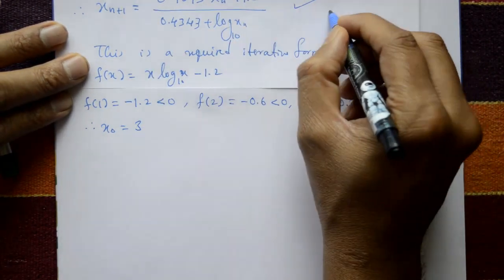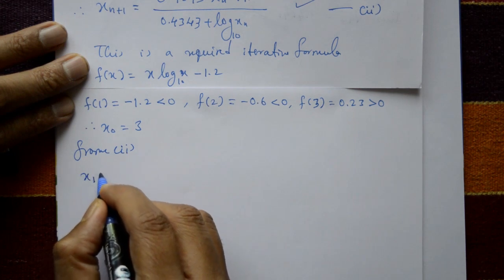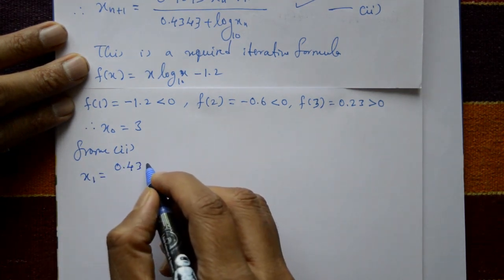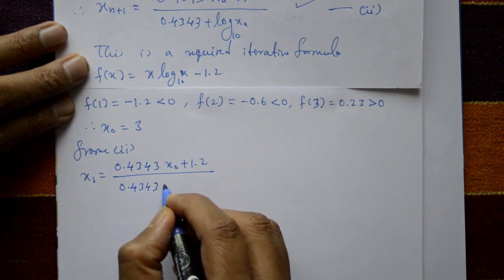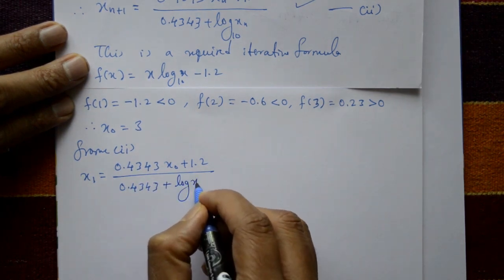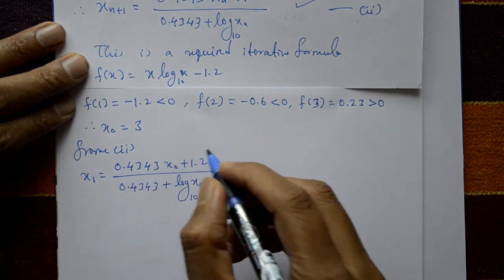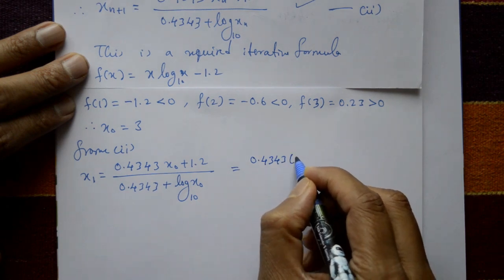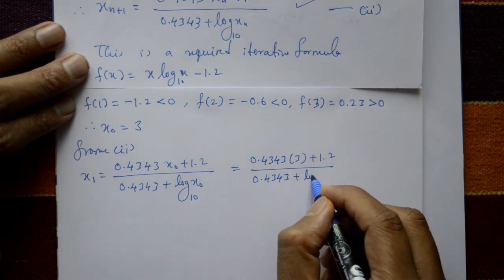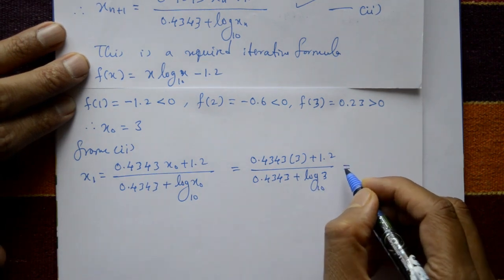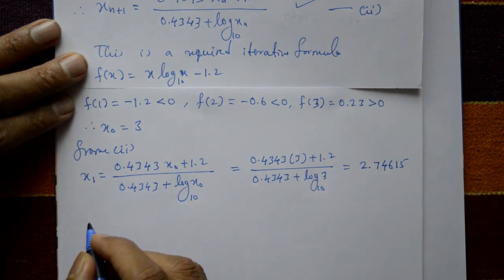Using equation number 2 with n = 0: x₁ = [0.4343·x₀ + 1.2] / [0.4343 + log₁₀(x₀)]. Substituting x₀ = 3: x₁ = [0.4343×3 + 1.2] / [0.4343 + log₁₀(3)] = 2.74615. This is the first iteration.